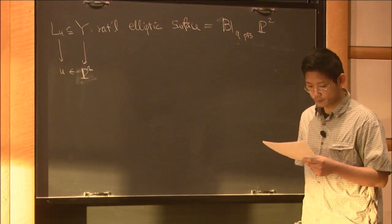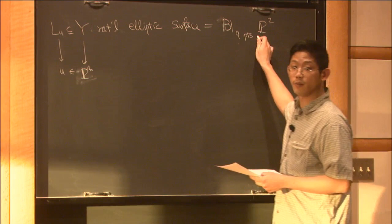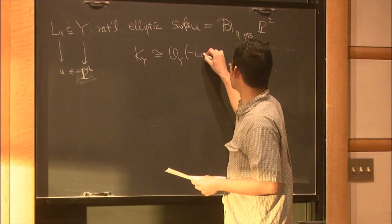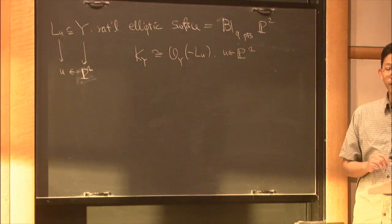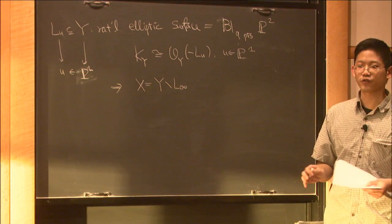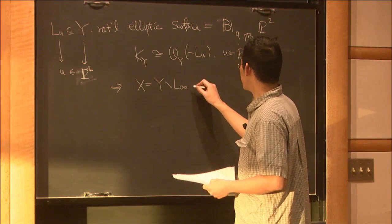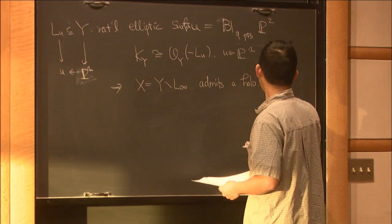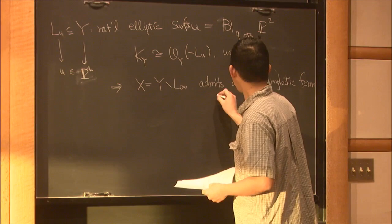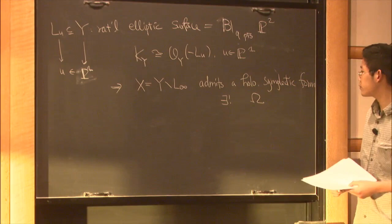Using the fine notation: this has a fibration structure over P¹, a pencil of curves. For a point U in P¹, the fiber is called L_U. Since it's a blow-up of P² at nine points, we use the blow-up formula to calculate the anti-canonical bundle, which is nothing but minus a fiber. So if X equals the complement of the fiber at infinity — just throw away whichever fiber you don't like — then X is the complement and admits a holomorphic symplectic 2-form, which I'll call omega.